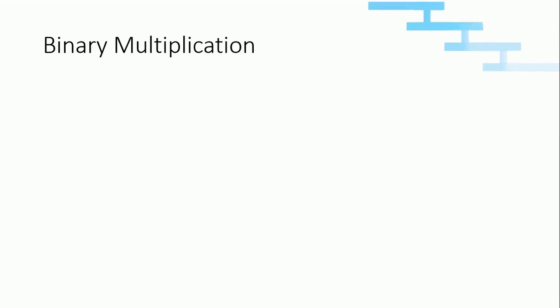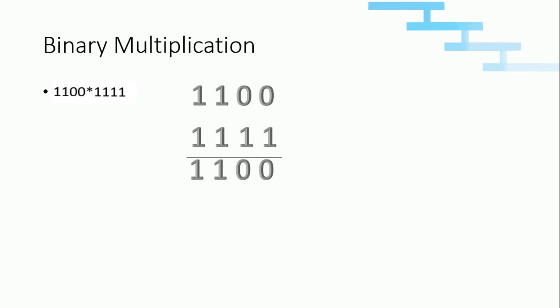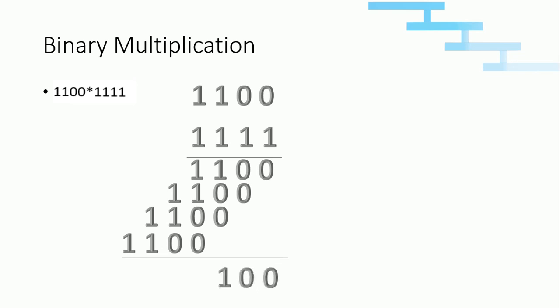Now we will see binary multiplication. We need to multiply one one zero zero with one one one. One into zero is zero, one into zero is zero, one into one is one, one into one is one. Likewise we do this for all the bits. Now we need to add all the values. Zero zero zero one one zero: one is a carry. One one one one one: one is the carry. One one and one gives one one, so one is the carry. One one gives us one zero. So if we multiply one one zero zero by one one one we get the following output.